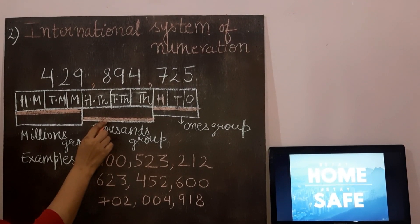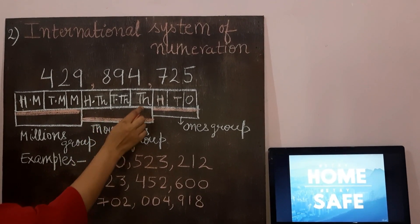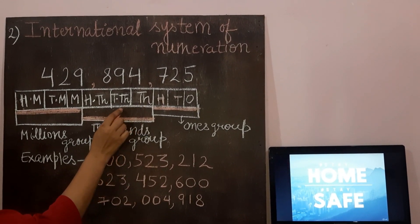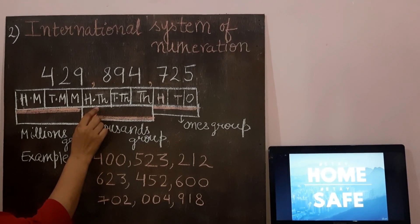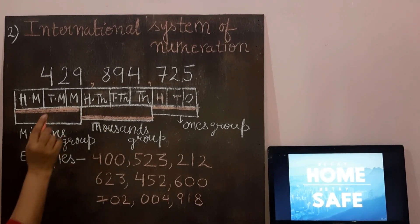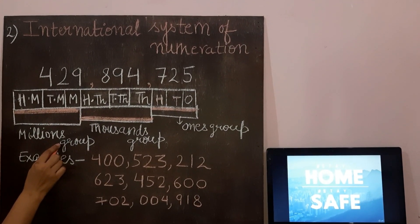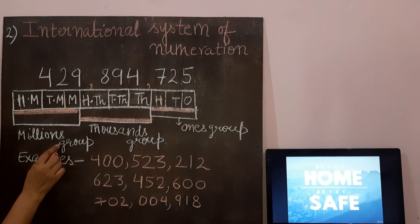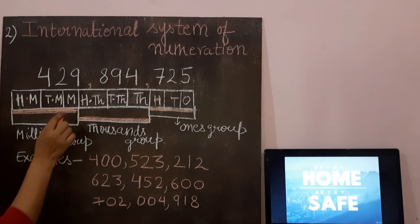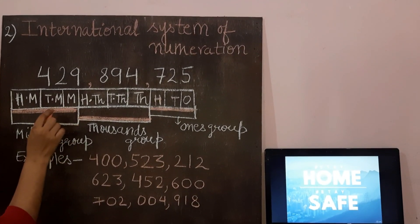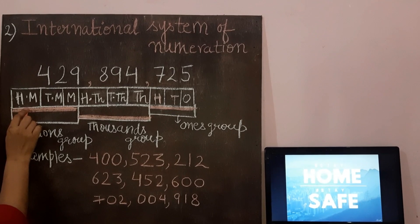It has 3 places: 1's, 10's, 100's. The next group also has places starting from 1's up to the thousands, and the third group continues similarly.